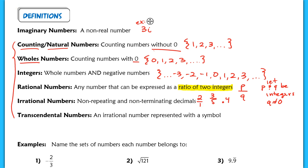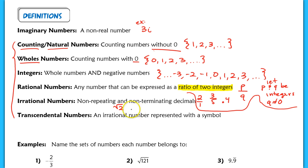An irrational number is a non-repeating and non-terminating decimal. A number like the square root of 2 is an irrational number — it is non-repeating and non-terminating. This is approximately 1.4142, and it goes on forever. We cannot rewrite this as a ratio of two different integers, so we call it an irrational number.